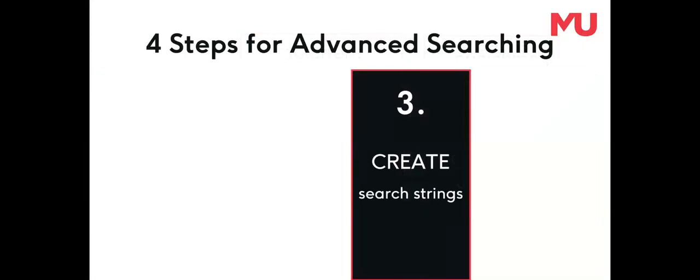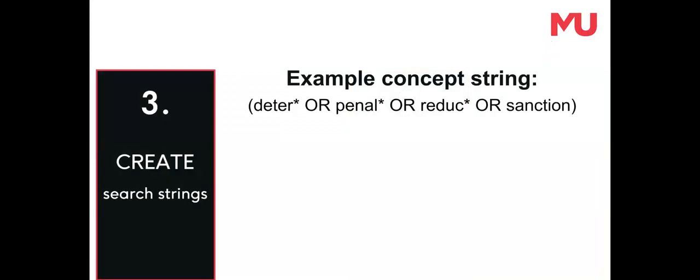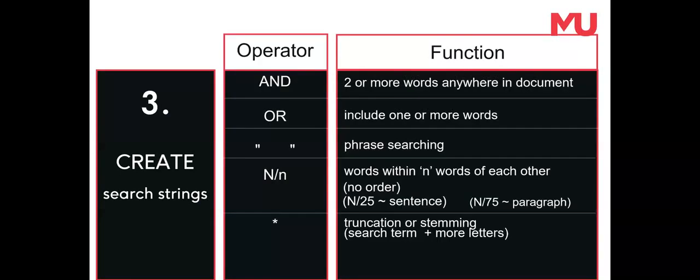Step three is to create search strings from the search words. Use Boolean and search operators to truncate search words and to join search words into strings. The main operators are AND to search for both words in a document, OR to search for either word in a document, double inverted commas placed around words to create phrases, proximity limiters to search for words within a specific number of words of each other, and the asterisk symbol for truncation or stemming.